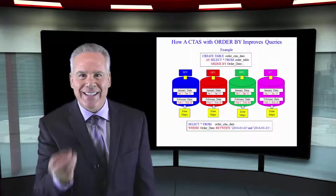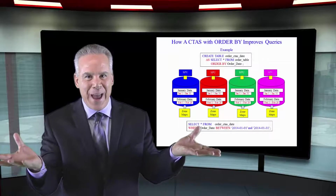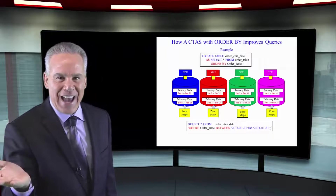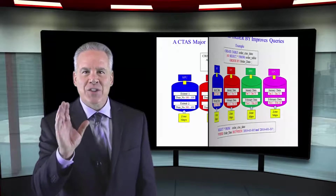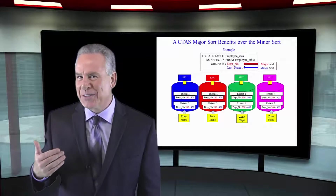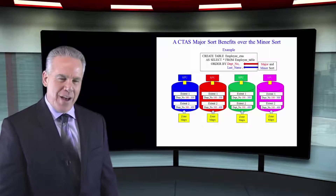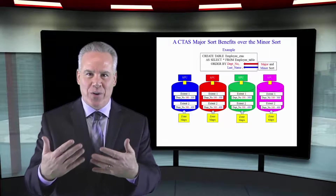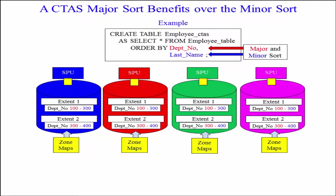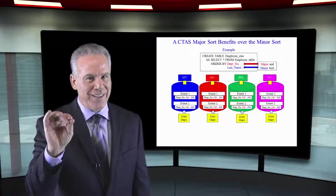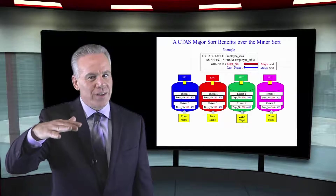That's why you create a CTAS — to get the data ordered so the zone maps can really get the tightest min and max for important columns. I am setting you up here for what we're about to see: cluster-based tables. But notice here we've got a benefit of a CTAS in that we can order it, but we've got multiple keys in our sort. As you can see here, we've got DEPNO as the major sort, so all of the data is going to be sorted by DEPNO, and on any department number ties it's going to go to last name. That's a major sort and a minor sort. The major sort will get most of the benefit when we're dealing with the zone maps. Minor sort — not so much.